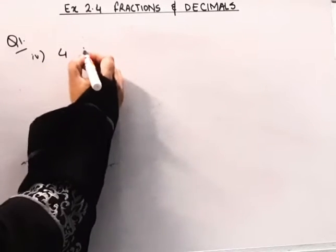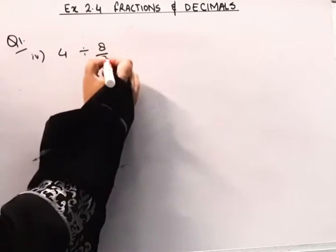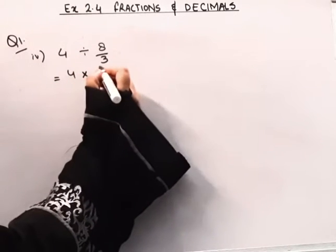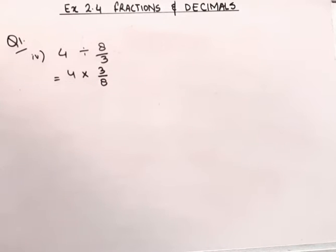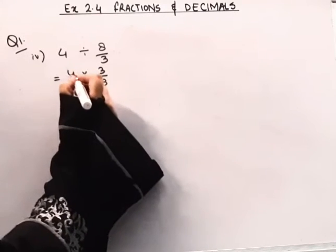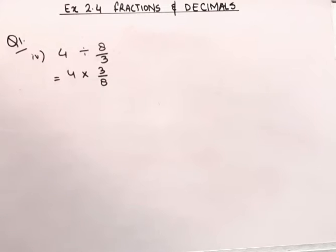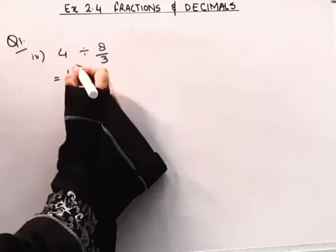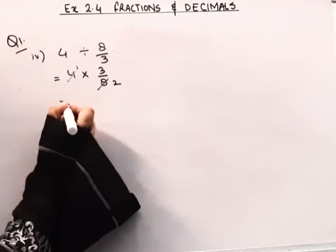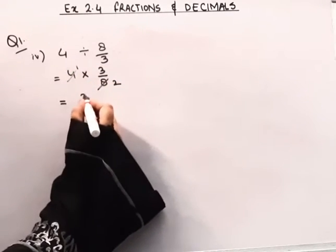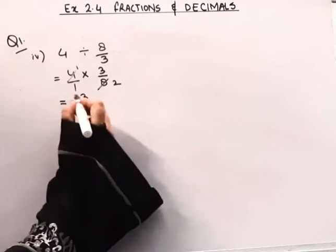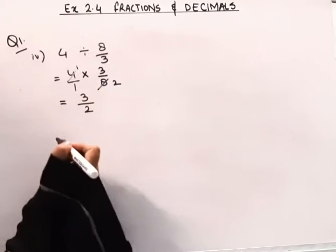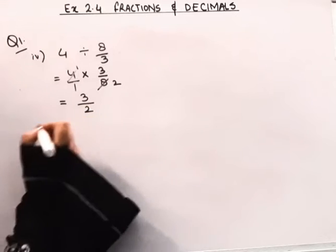The 4th part is 4 divided by 8 by 3. Division will change to multiplication — it will be reciprocal — so it becomes 3 by 8. Now 4 and 8 both have 4 as a common factor. 4 ones are 4, 4 twos are 8. So we get 3 ones are 3 divided by 2 ones are 2, giving the answer 3 by 2.